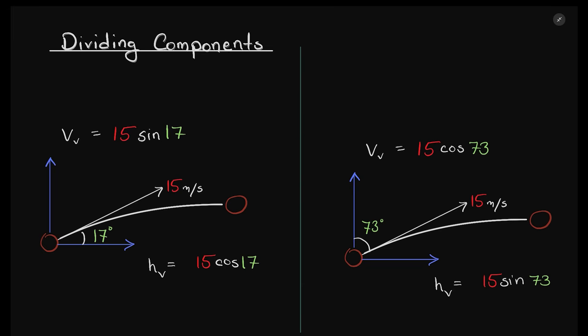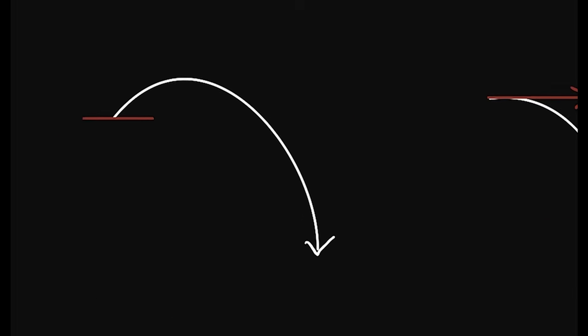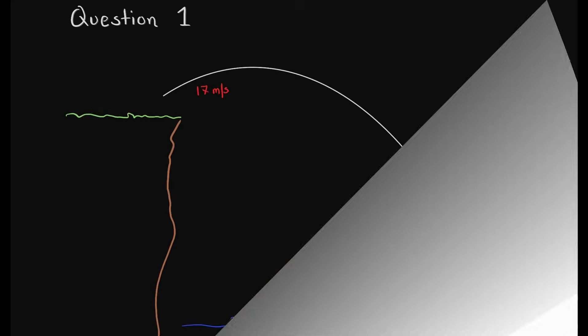You can pick whatever angle you want. Also remember, horizontal doesn't always mean we have to use cos. The horizontal component can be cos or sine — that is dependent on the angle position. Now let's jump into the first type of question.